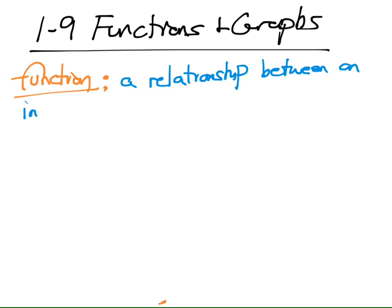A function is a relationship between an input and output. For example, this would be a function. Typically x is our input, y is our output. This would be a function because every x I put in, I double it and I get y.